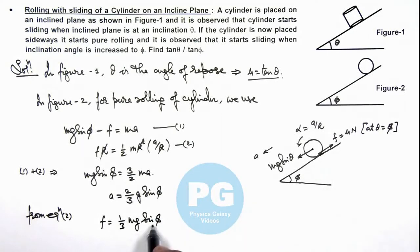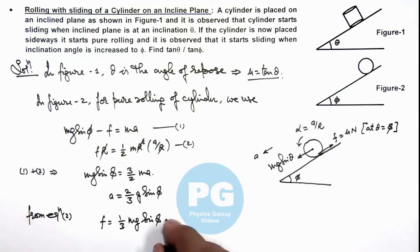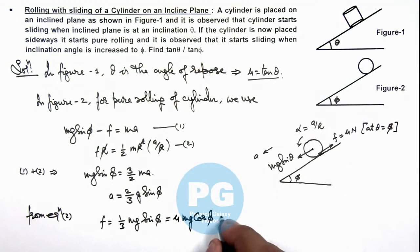And as it is the value at which the cylinder just starts sliding, so this must be equal to mu n, which is mu mg cos phi. And this is giving us the value of mu is equal to 1 by 3 tan phi.